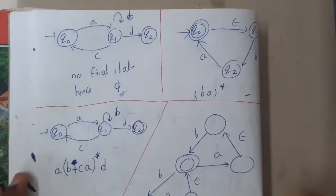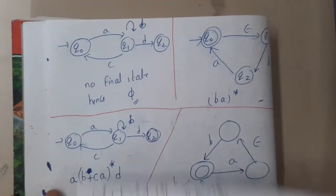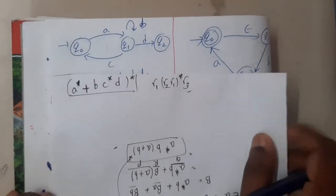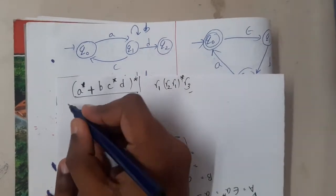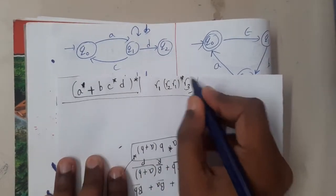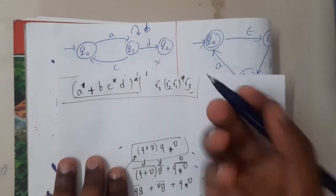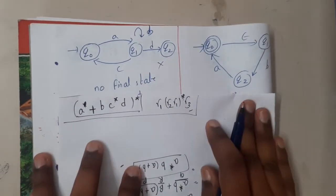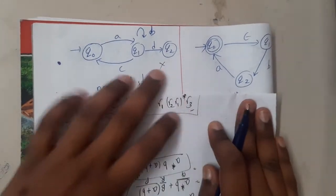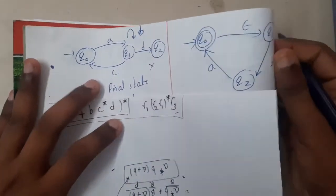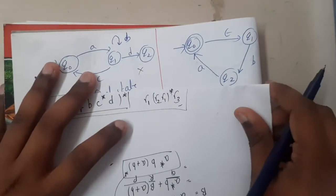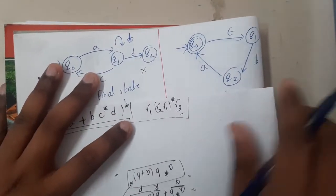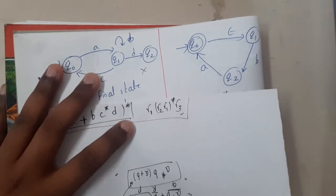In this question, is there any final state? As there is no final state, I don't know what we should write here. Moving on to the next question — they gave epsilon, meaning there is a free transition.